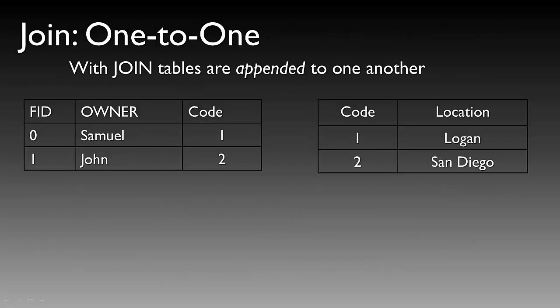As an example, let's look at a one-to-one join. Remember that with a join, tables are actually appended to one another, not just linked. In this example, we have two tables. On the left, we have a table associated with a spatial attribute dataset — you can tell because it has an FID, or feature ID.